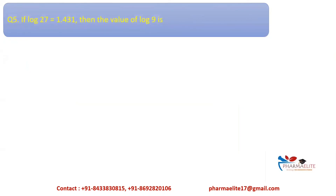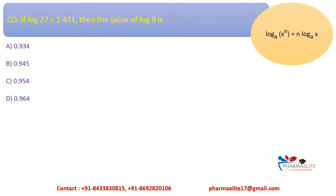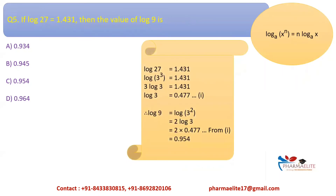The last question of the day: If log 27 = 1.431, then find the value of log 9. This uses the logarithmic rule: log(X^N) = N × log(X). We write 27 as 3^3, since the cube of 3 is 27. Applying the formula, the power 3 is brought before log, and dividing 1.431 by 3 gives log 3 = 0.477.